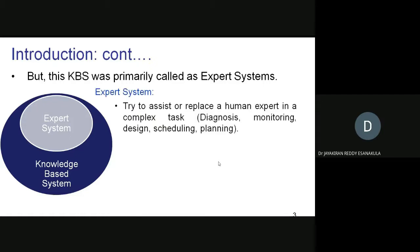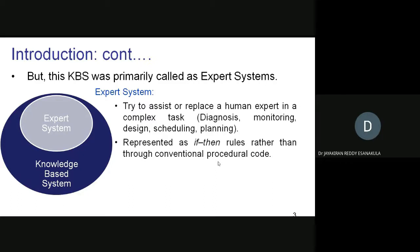An expert system can replace a human expert in a complex task. Tasks can be of any type — diagnosis, monitoring, designing, scheduling, planning, or whatever. In traditional approaches we use humans for all this, and once expert systems came into existence, this traditional process was replaced. An expert system is completely based on if-then conditions, represented as if-then rules rather than conventional procedural code.